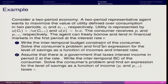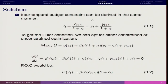The first question is: write the intertemporal budget constraint of the consumer, solve the consumer's problem, and find an expression for the level of savings as a function of incomes and interest rate. So, Ct plus St equals Yt, and then Ct+1 equals Yt+1 plus St times 1 plus Rt. If you solve for St and substitute back into the original equation, you get: Ct plus Ct+1 upon 1 plus Rt equals Yt plus Yt+1 upon 1 plus Rt.